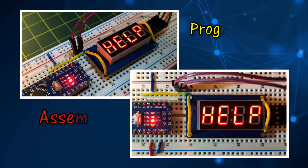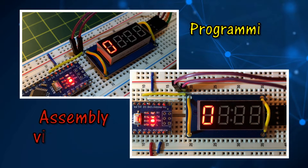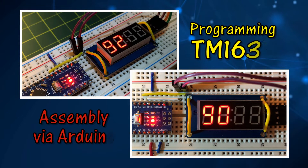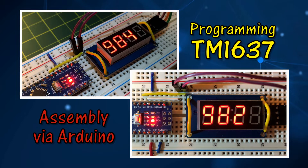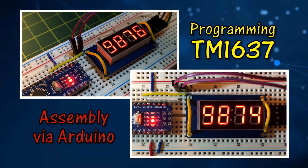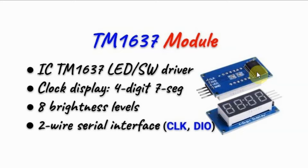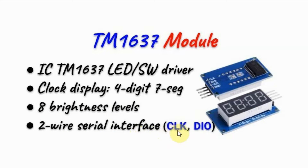This video presents assembly programming of the TM1637 module. The TM1637 is a four-digit seven-segment clock display mainly used in digital clock applications. The module uses the TM1637 IC, an LED switch driver interfaced serially with a microcontroller. It is designed as a clock display with four-digit seven-segment units, and can have eight brightness levels, interfaced via a two-wire serial interface.